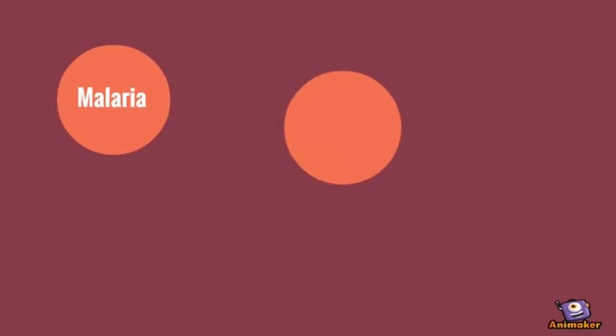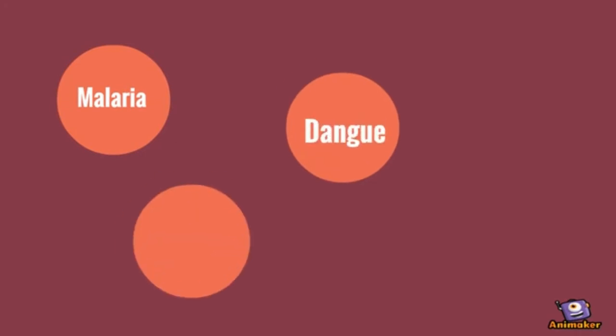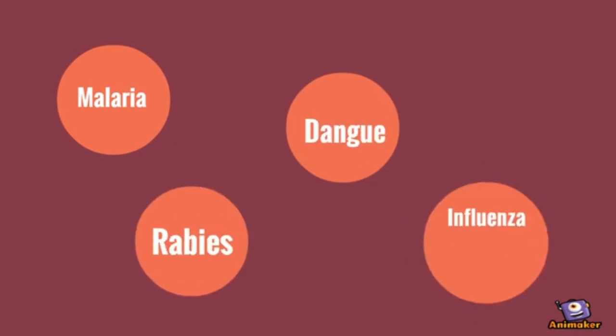The second priority is animal-borne diseases, such as malaria, dengue, rabies, and avian influenza.